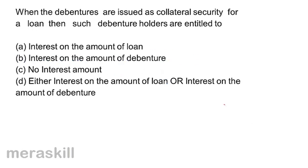When debentures are issued as collateral security for a loan, then such debenture holders are entitled to: A. interest on the amount of loan  B. interest on the amount of debenture  C. no interest  D. either interest on loan or debenture. Collateral security is just additional security. No interest is payable unless there is default on the loan. So debenture holders are entitled only to interest on the amount of loan. Correct answer: option A, interest on loan.